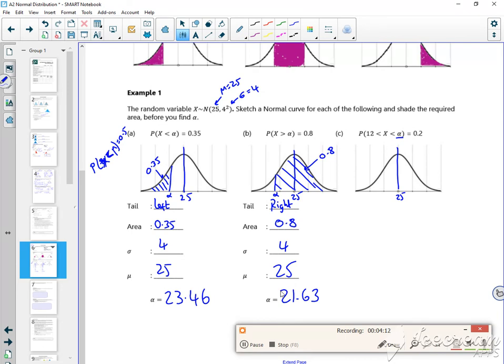The probability that x is less than 12 - if you stick it in your calculator with NCD with a lower tail of minus 10,000 and upper tail of 12, gives you 0.000577.